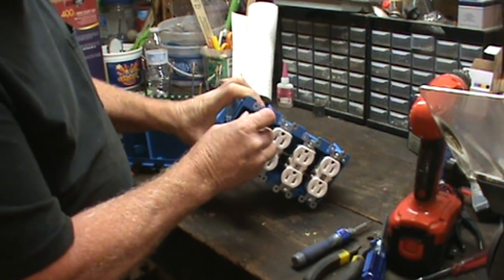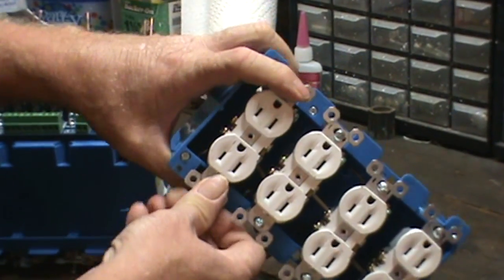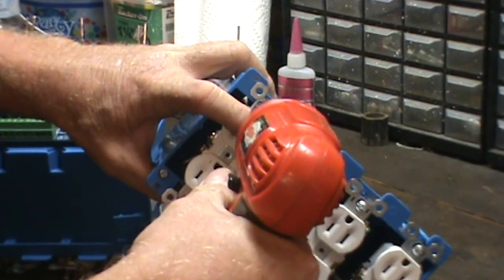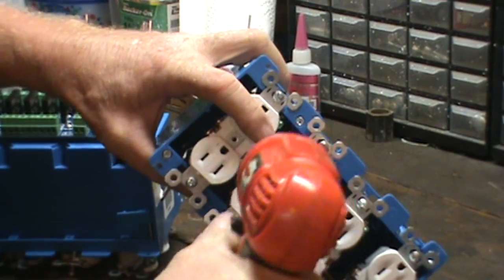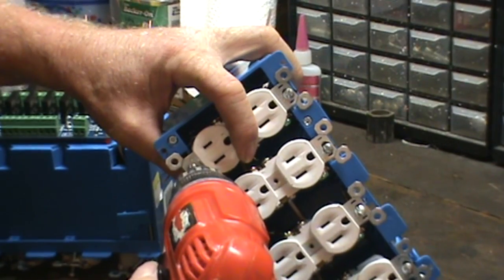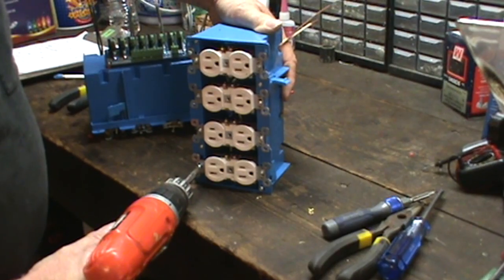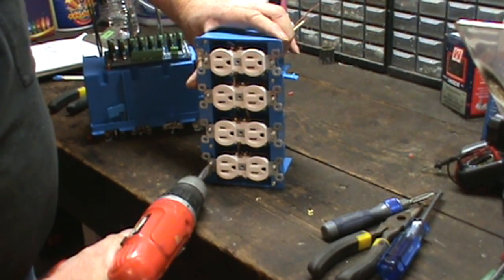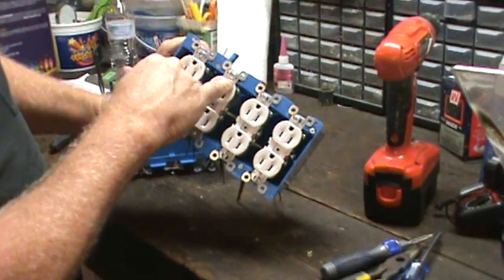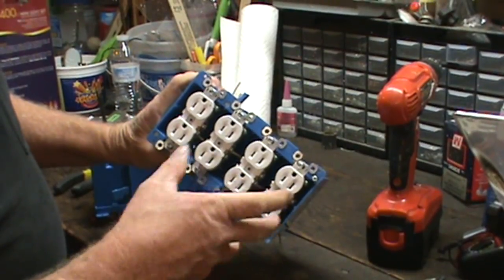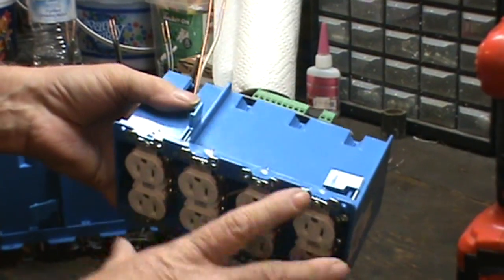So we need to line up the screws with the holes, one by one here and tighten them down. Now you don't have to worry right now about centering these sockets on the screws. You can see there's a slot in the end of each socket so that it can be moved around. We will readjust them when we put the cover plates on. So do that with both boxes.